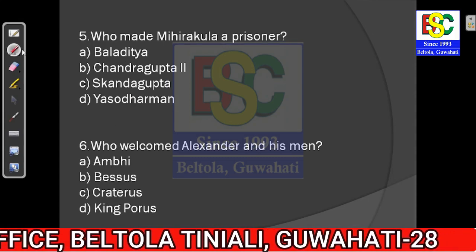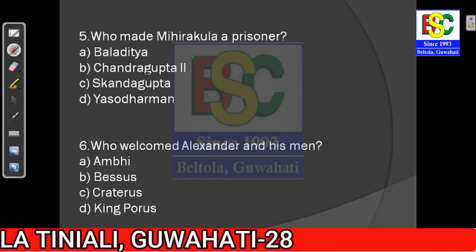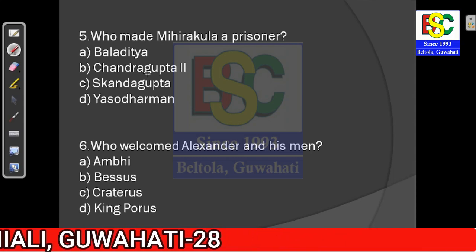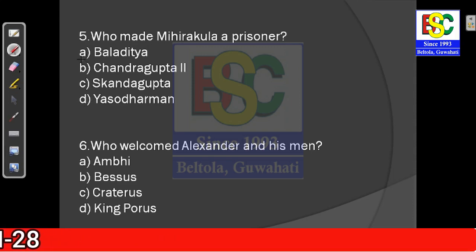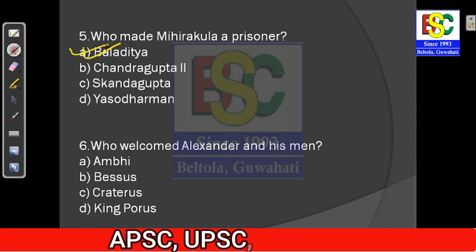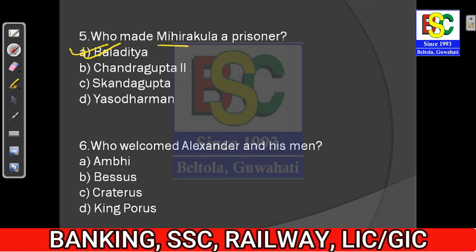Question number five: Who made Mihirkula a prisoner? The answer for question number five is option A — Baladitya. Baladitya was a person who invaded Magadha and it was he who captured and imprisoned Mihirkula.